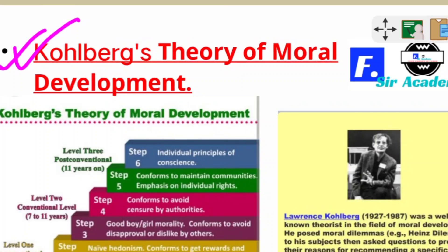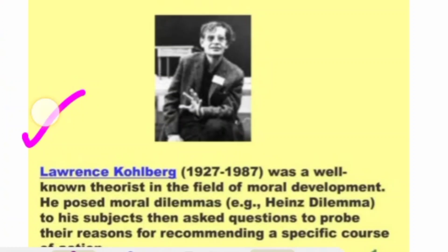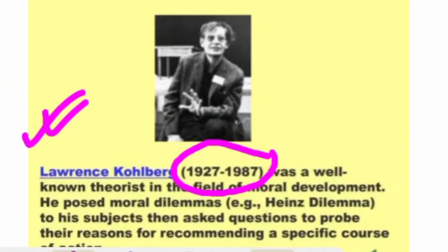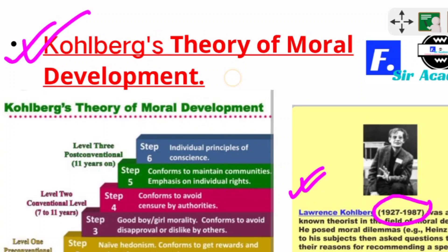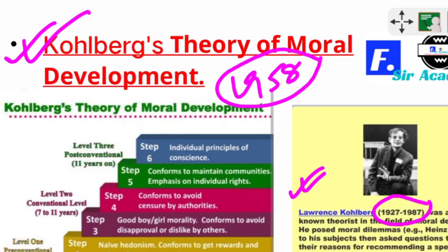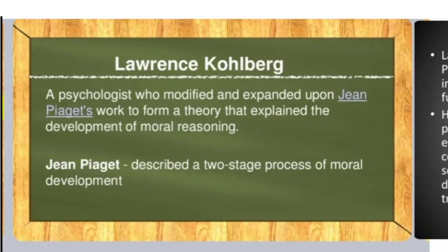Kohlberg's moral development theory will be discussed. First of all, we have to know about Lorenz Kohlberg. Lorenz Kohlberg was an American psychologist, born in 1927 and died in 1987. He stated the theory of moral development of children in 1958. Kohlberg worked further on Piaget's theory by explaining the development of moral reasoning in children as well as adults.